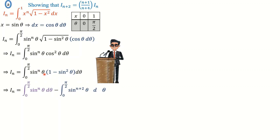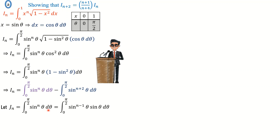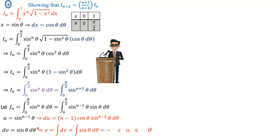We can rewrite cos squared θ as 1 minus sine squared θ, then expand to get sine to the n of θ times 1, minus sine to the n of θ times sine squared θ. If I define one of these integrals as J(n), it is simply the integral of sine to the n of θ, and the other one will be J(n+2). I am going to integrate J(n+2) by parts. I let u equal sine to the n of θ, giving du equal to n cosine θ sine to the n−1 of θ dθ, and dv equal to sine θ dθ, so v equals negative cosine θ.